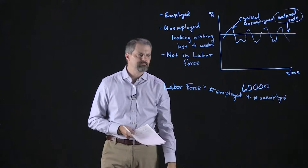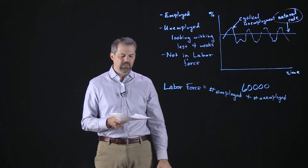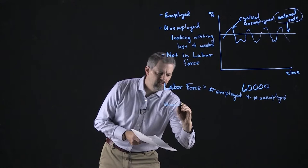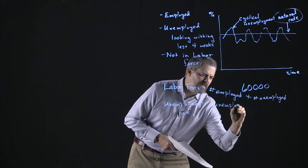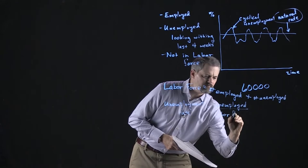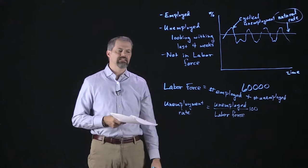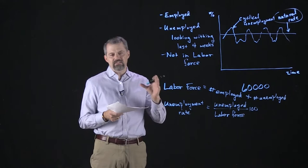Once we've got the labor force — number of employed plus the number of unemployed — we can calculate the unemployment rate. The unemployment rate is very easy to calculate: take the number of unemployed, divide by the labor force, and multiply by 100 to turn it into a percent. That tells us the percent of the labor force that doesn't have a job but is actively looking for one.